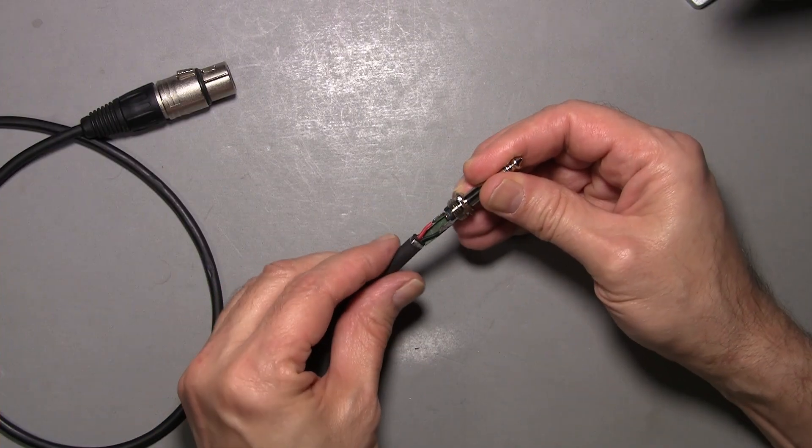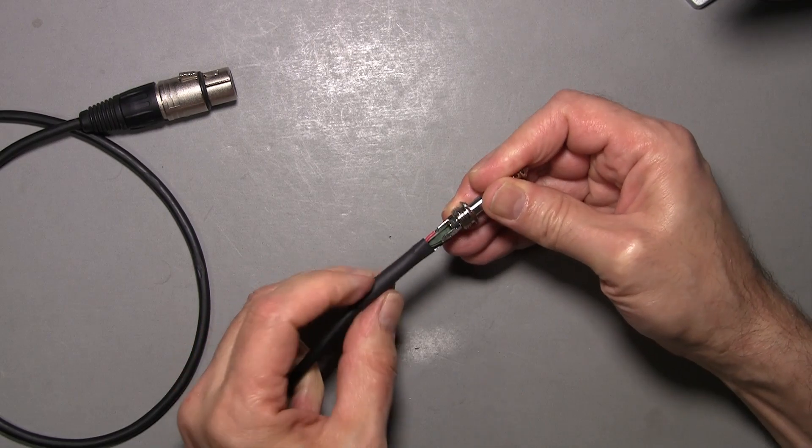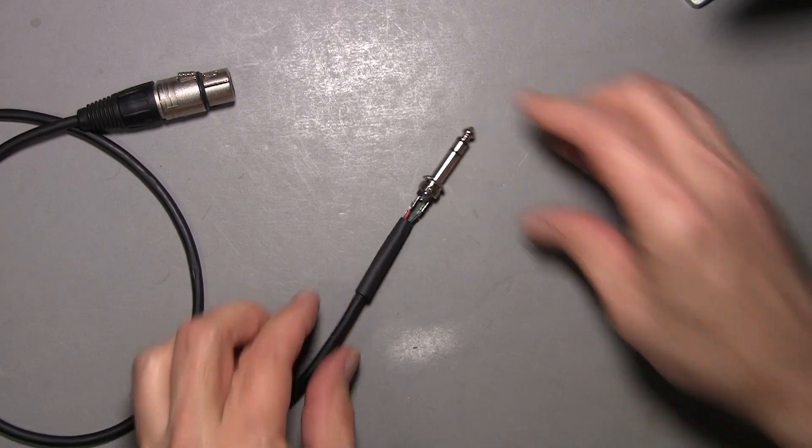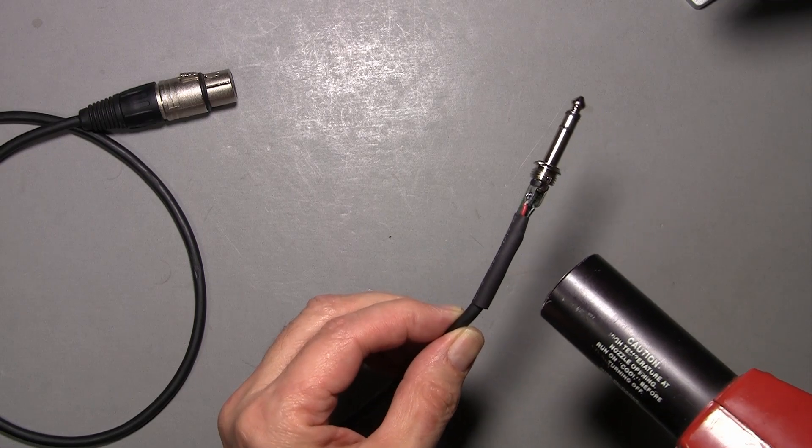Slide up the shrink. Heat it. If you don't have a heat gun, you can usually get by with a butane cigarette lighter.